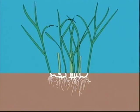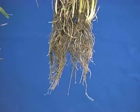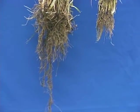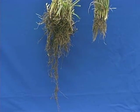Plants absorb most of their mineral and water requirements through their root system. Plants with a large root system can efficiently absorb nutrients and water. However, plants with a limited root system have difficulty absorbing enough nutrients or water even if they are abundant in the soil.